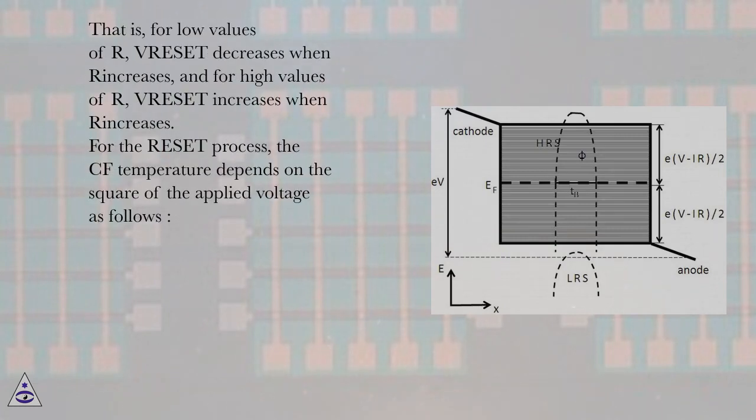IRESET always decreases when the resistance increases. On the other hand, the VRESET in function of R curve has a U behavior. That is, for low values of R, VRESET decreases when R increases, and for high values of R, VRESET increases when R increases.